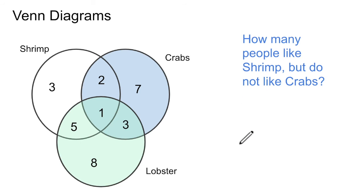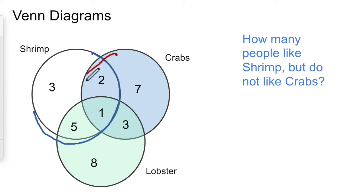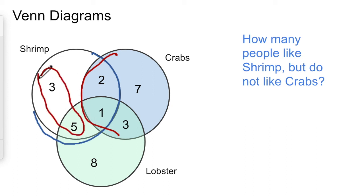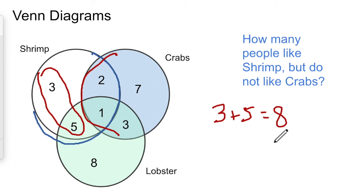Here's a new problem: how many people like shrimp but do not like crabs? The shrimp lover's circle is this circle here. We're looking for people inside this circle but not inside the crab circle — inside the blue but outside the red. That gives us the 3 and the 5. These people like shrimp but do not like crabs. So 3 plus 5 equals 8. Our answer is 8.